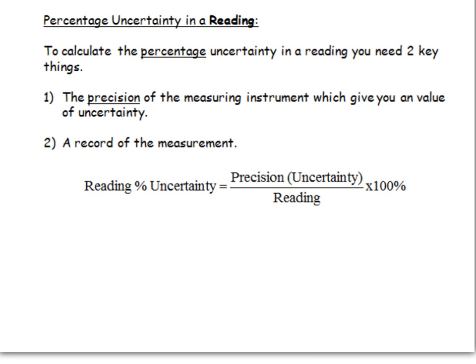So first of all, uncertainty in a reading. In this exam you have to be very careful to read the question correctly to know if it's asking for the uncertainty in a reading or the uncertainty in the average or uncertainty in the mean value. Because if you calculate the wrong one, obviously you'll get no marks and you'll look a bit silly.